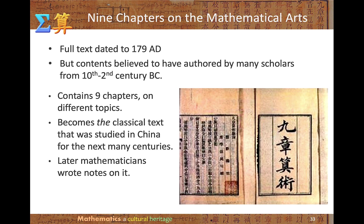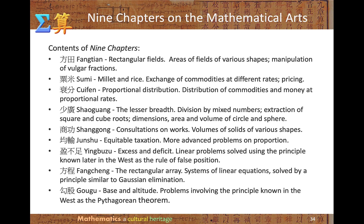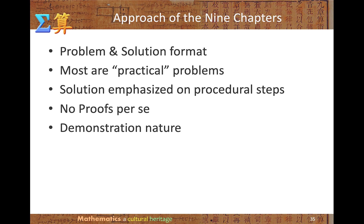The full text of the Nine Chapters on the Mathematical Art can be dated to 179 AD, but its contents are believed to have been worked on by many scholars over 800 years. It contains nine chapters on different mathematical topics and became the classical text studied in China for many centuries. Many mathematicians later wrote commentaries on it. The approach of the Nine Chapters is similar to Egyptian and Babylonian mathematics: problems in a problem-solution format, mostly practical, with procedural steps emphasized and no proofs — a demonstrative nature.